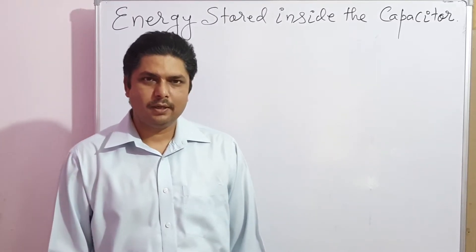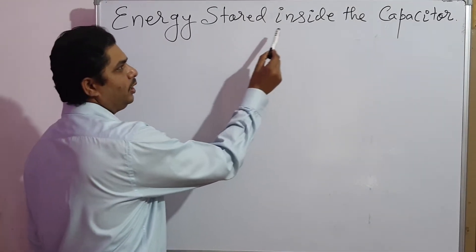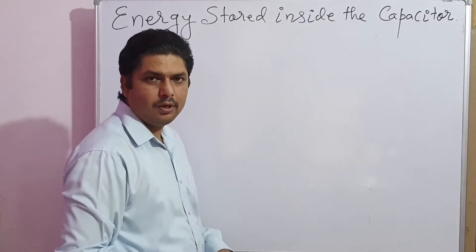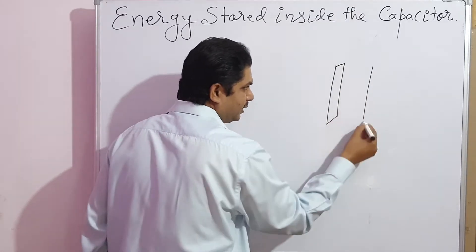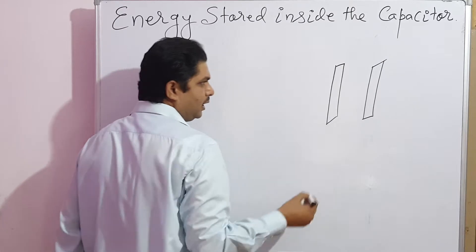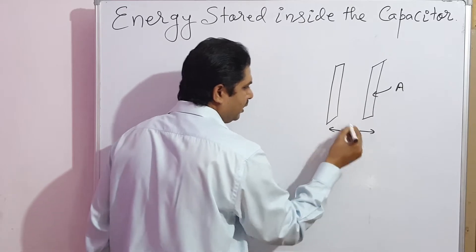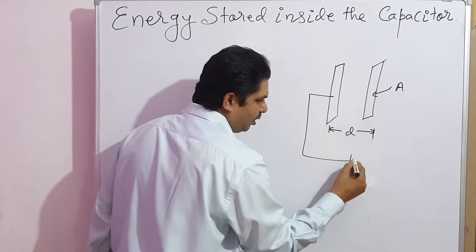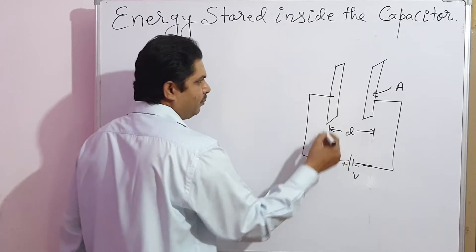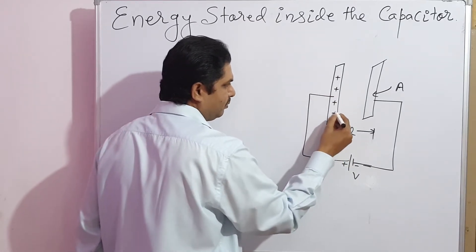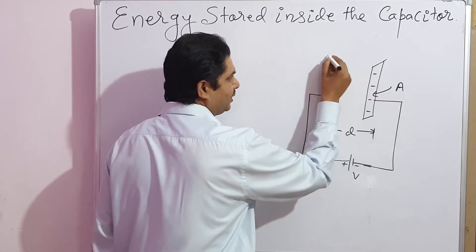Hello students, today your topic is energy stored inside the capacitor. Suppose we have a parallel plate capacitor — two plates having plate area A and plate distance D. These two plates are connected to a potential source V. Let plus charge be stored in one plate and minus charge in the other. Let the capacitance of the parallel plate capacitor be C.